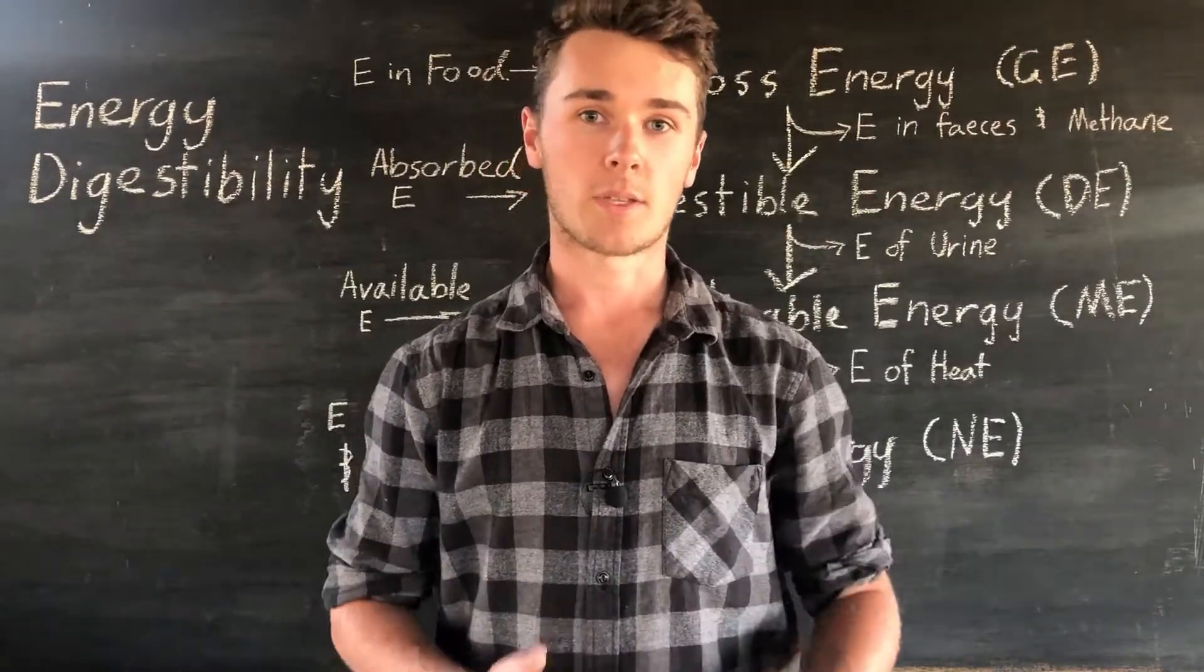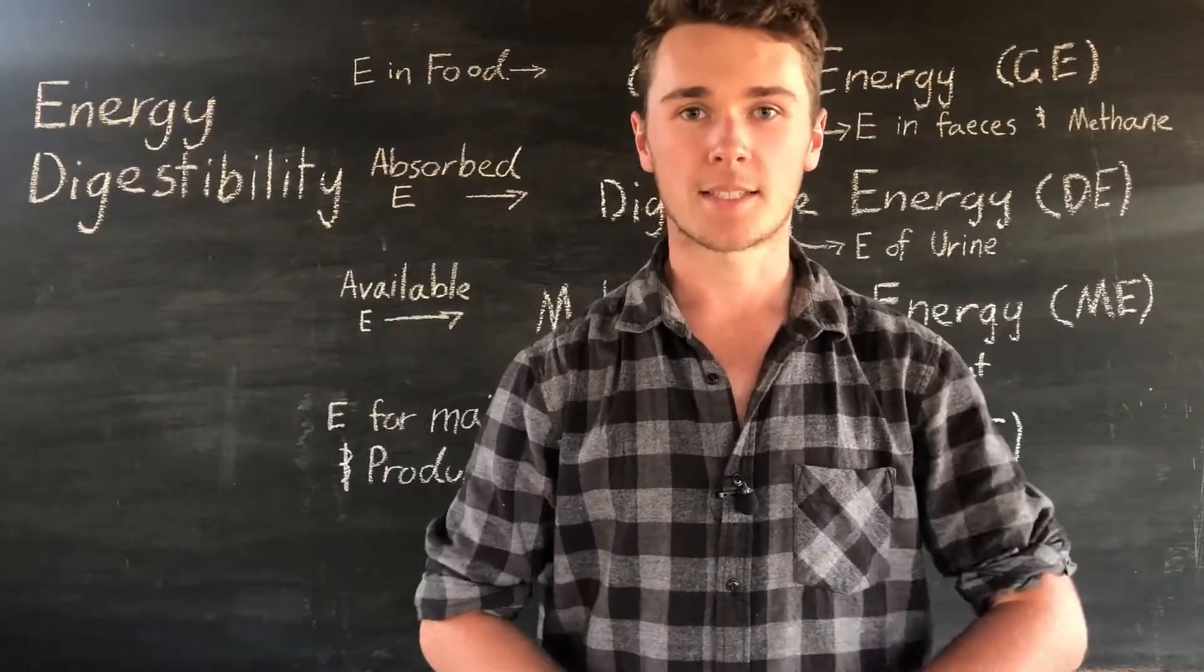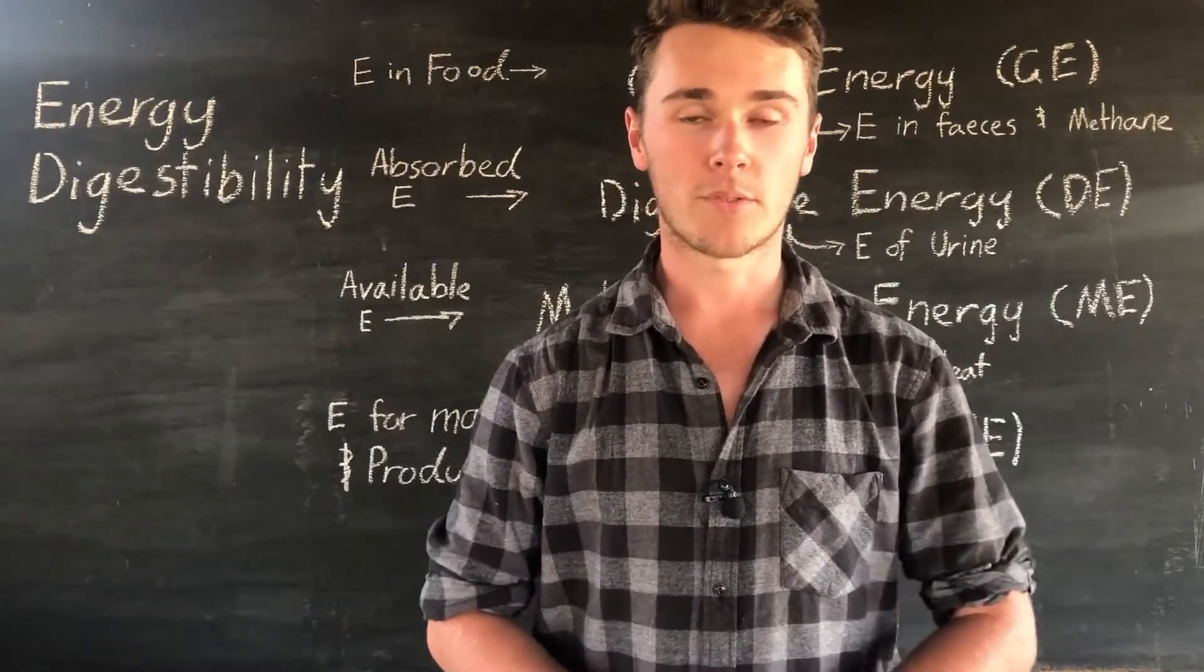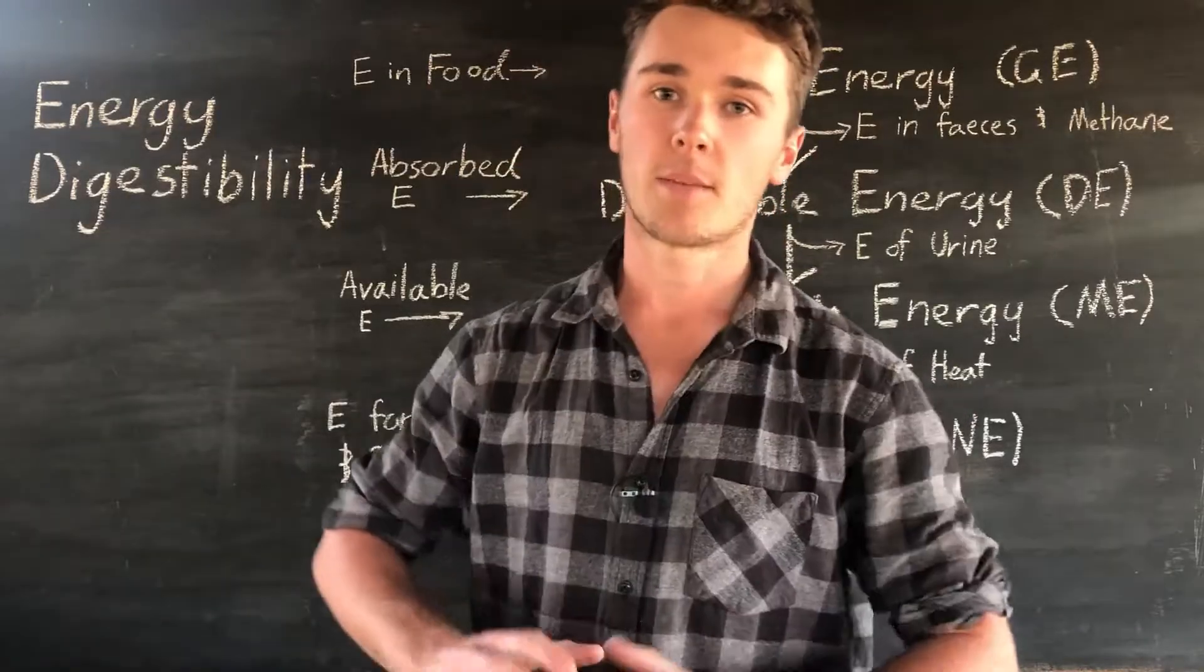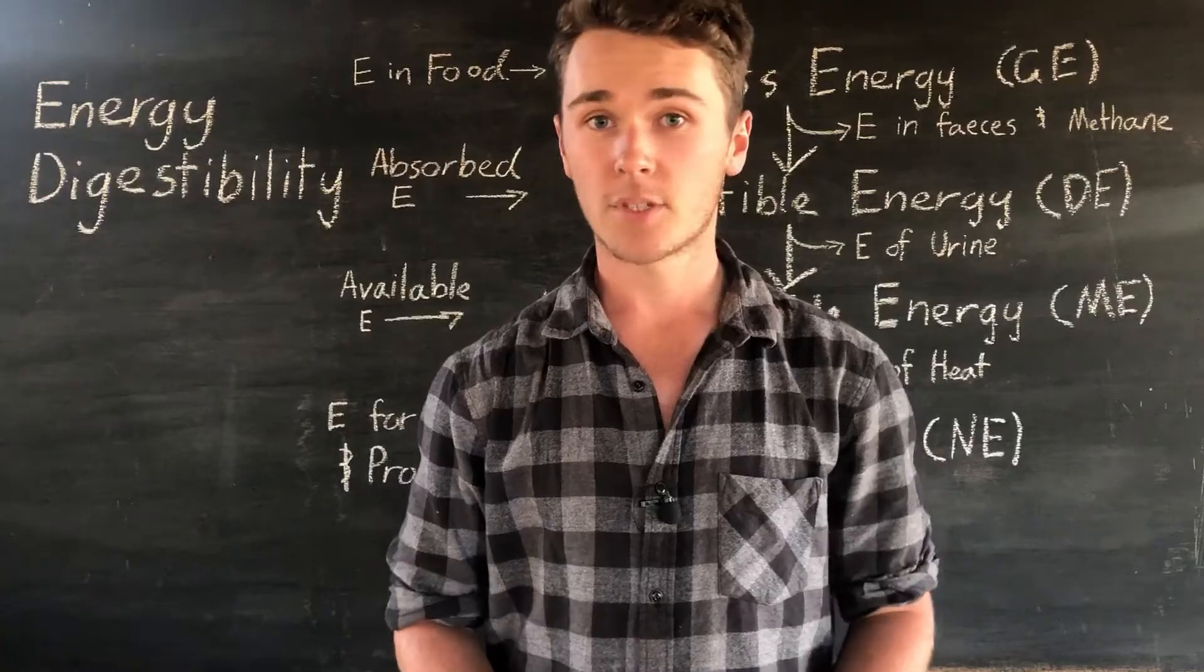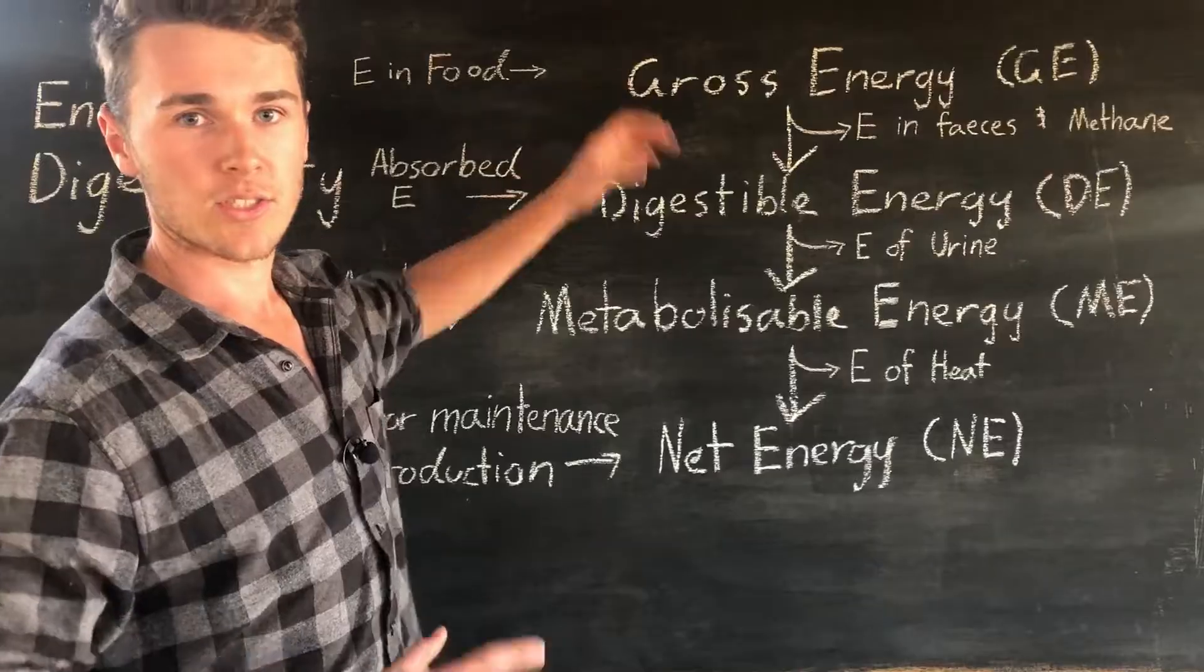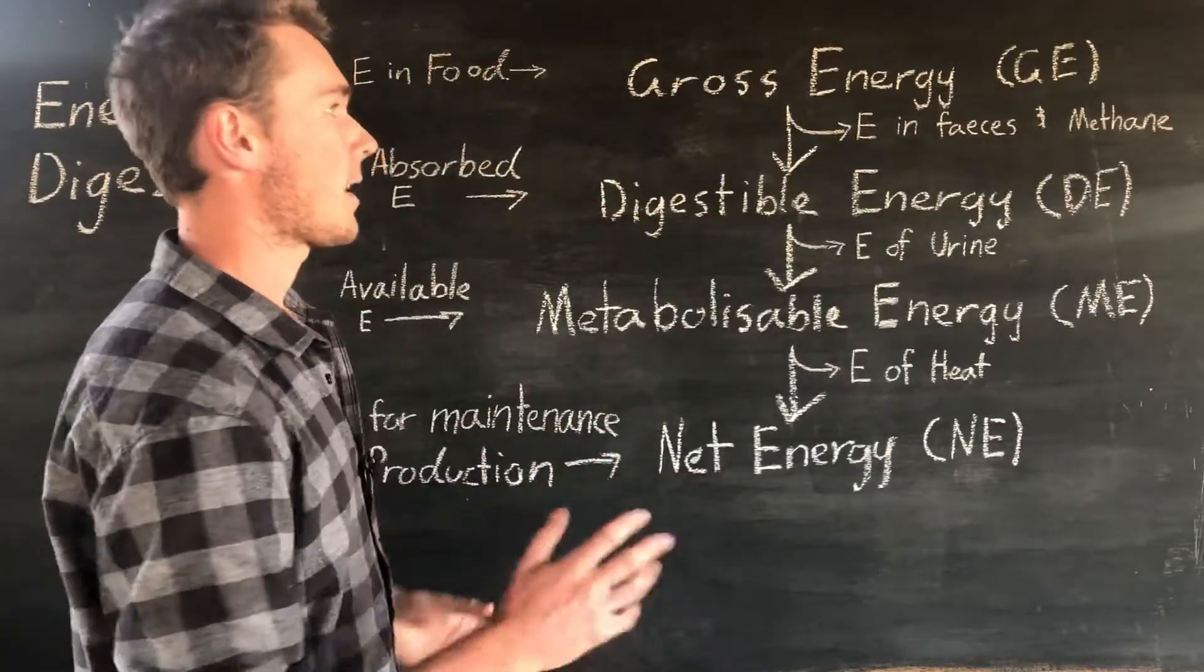There's four different categories that we can talk about when discussing the amount of energy available for our animals. So we'll start at the top. Imagine you have a bag of food or feed for, say, your livestock. The total amount of energy in that is called gross energy. So that's all the energy, everything in that food.